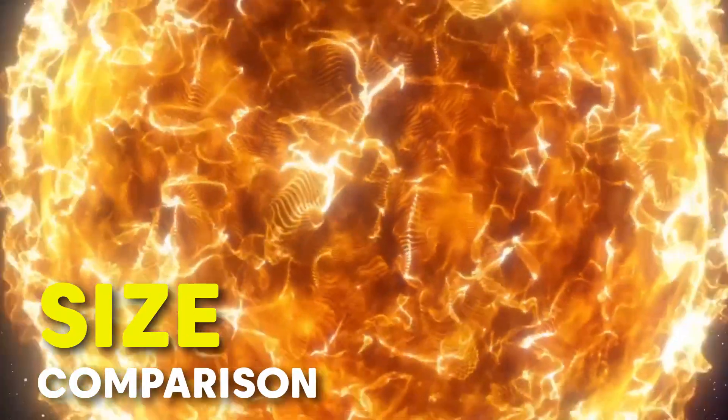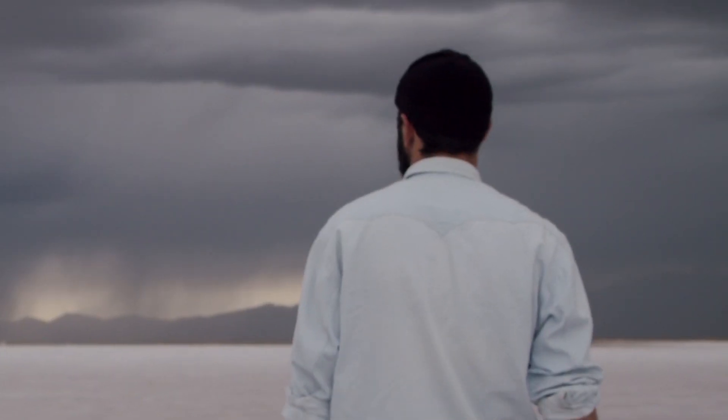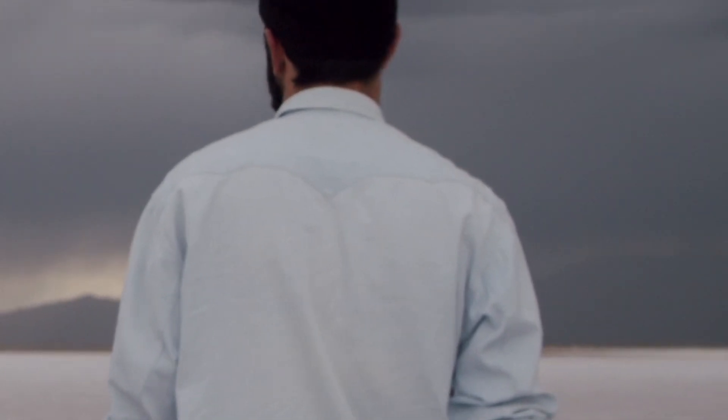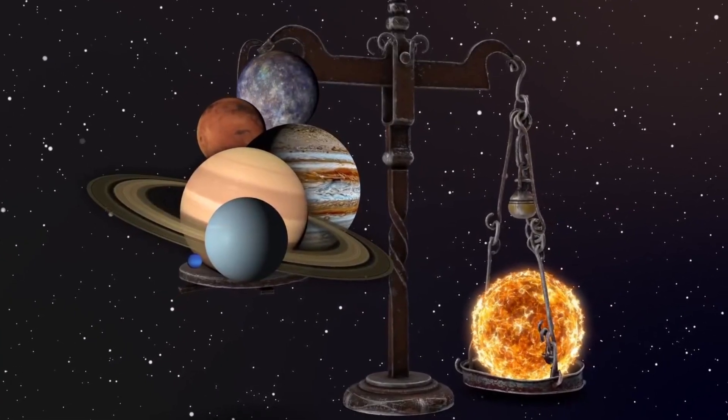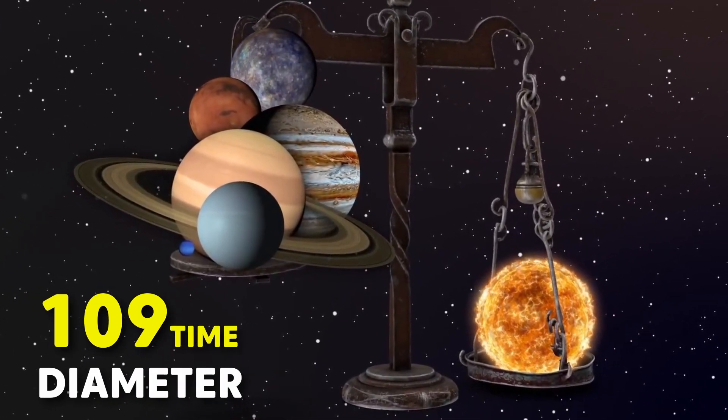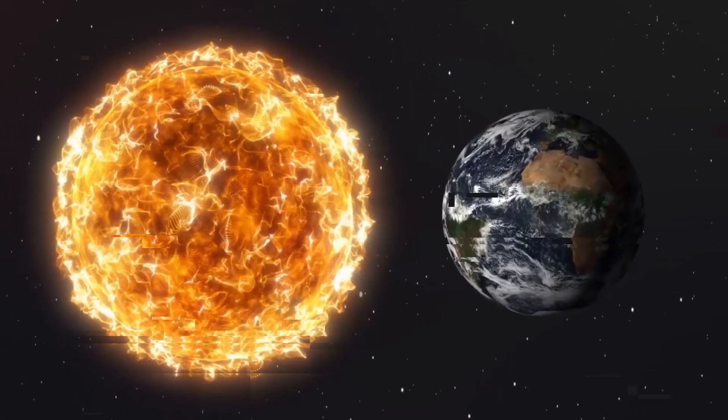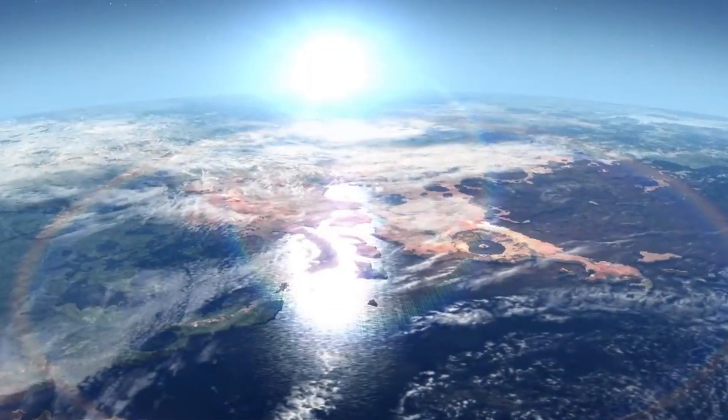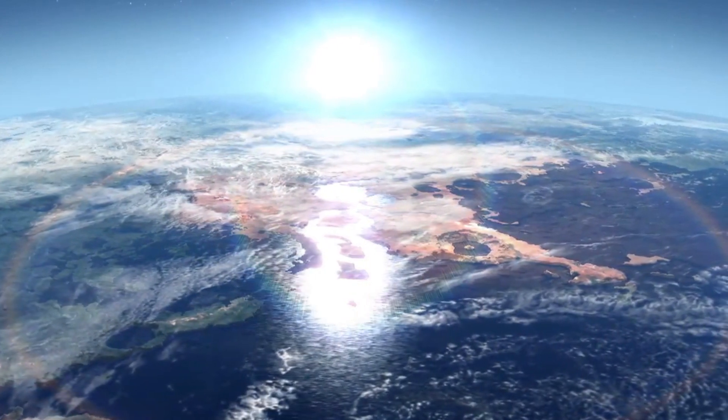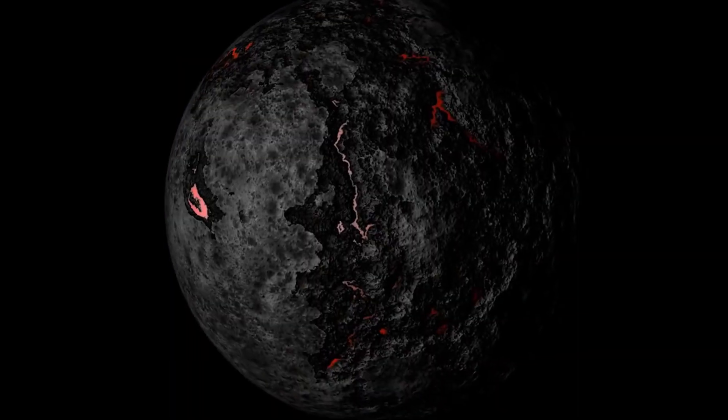Size Comparison: To truly grasp the magnitude of this hypothetical situation, let's start with a size comparison. The Sun is approximately 109 times the diameter of Earth. If Earth were to suddenly expand to the size of the Sun, it would be an astronomical transformation. Our once tiny blue planet would now be a colossal fiery giant.